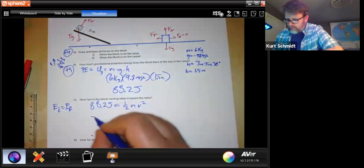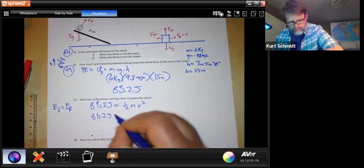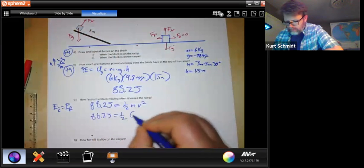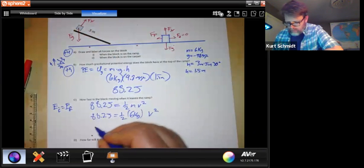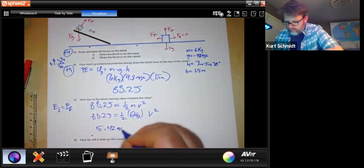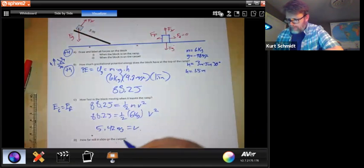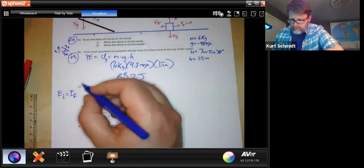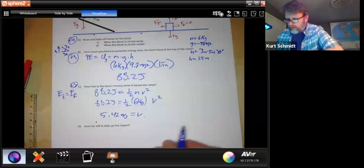So now we can do our 88.2 joules equals one half six kilograms times V squared, which means V equals 4.2 meters per second. So that was another three-point question.